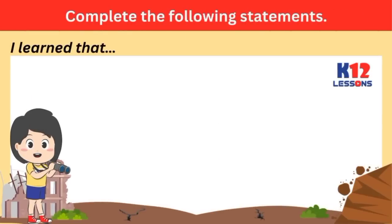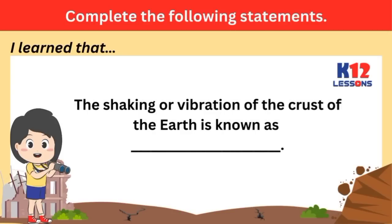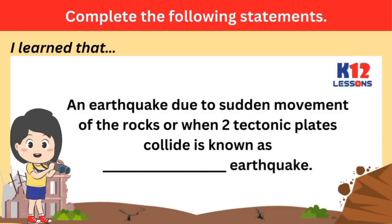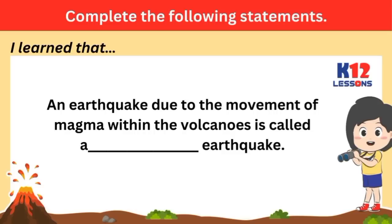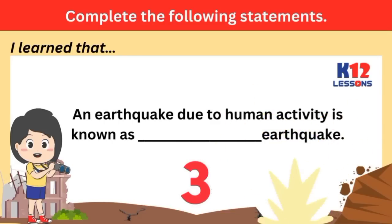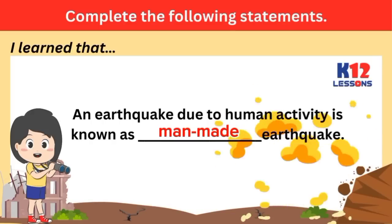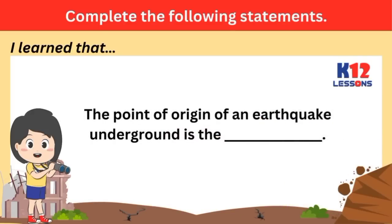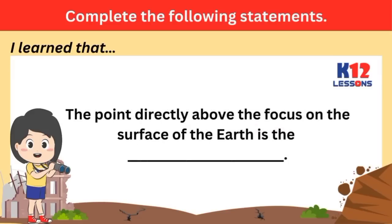Fill in the blanks. The shaking or vibration of the crust of the Earth is known as blank. An earthquake due to sudden movement of rocks or when two tectonic plates collide is known as blank earthquake. An earthquake due to the movement of magma within the volcanoes is called a blank earthquake. An earthquake due to human activity is known as blank earthquake. The point of origin of an earthquake underground is the blank. The point directly above the focus on the surface of the Earth is the blank.